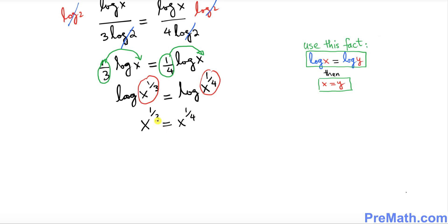We have fractional exponents with denominators 3 and 4, and we want to remove these fractions. The least common denominator of 3 and 4 is 12, so I'm going to raise both sides to the power of 12, which will eliminate those fractions.